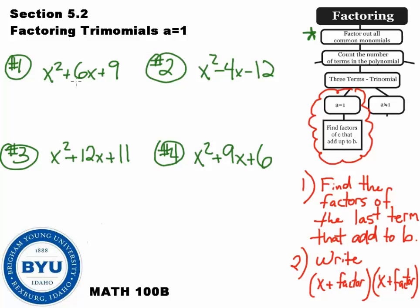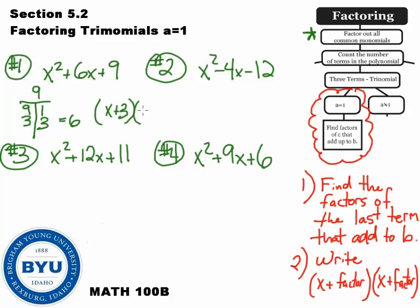Let's take a look at the solutions. For the first problem, you should have written out a factor table for 9. There's 9 and 1 — that doesn't give me 6. Other factors of 9? Well, 3 and 3 would work. And 3 plus 3 is 6. So that is the correct answer: x plus 3 and x plus 3.